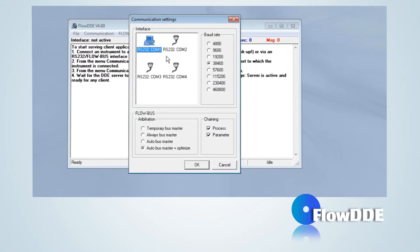In this window, the COM port and the baud rate can be selected. For most interfaces, the default baud rate is 38,400.